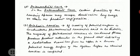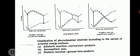Next comes the intermediate case. In the intermediate case, certain fractions of the reacting species may escape deactivation long enough to attain the product configuration, as can be seen in the diagram.